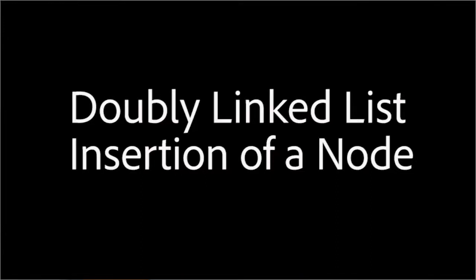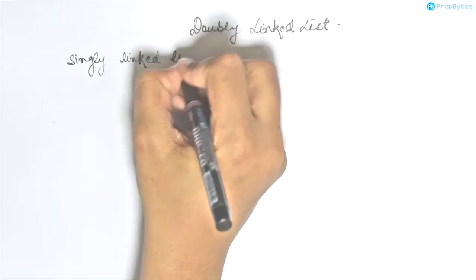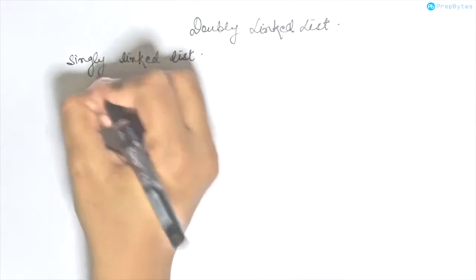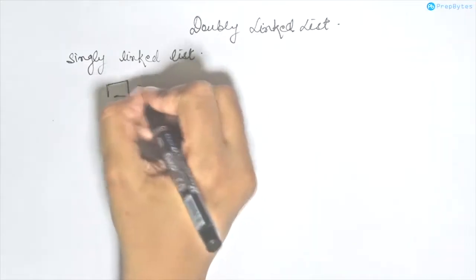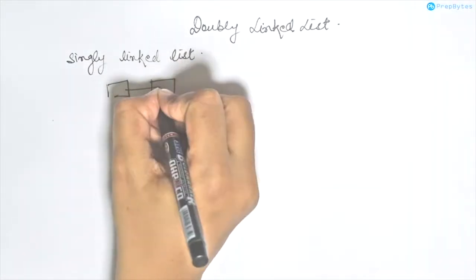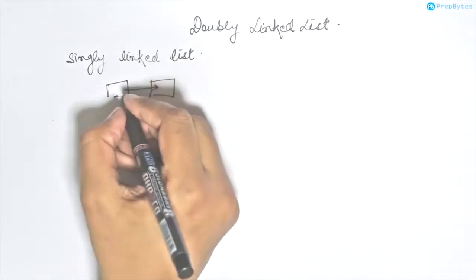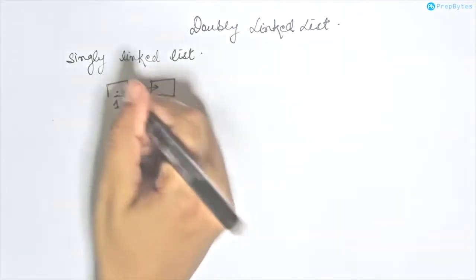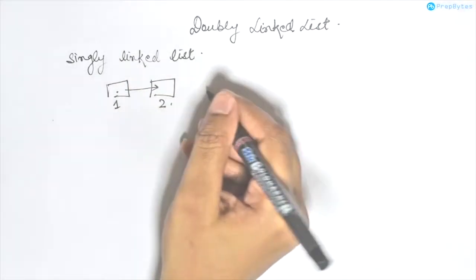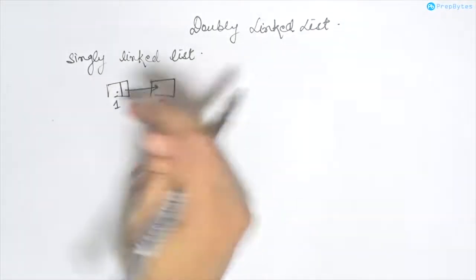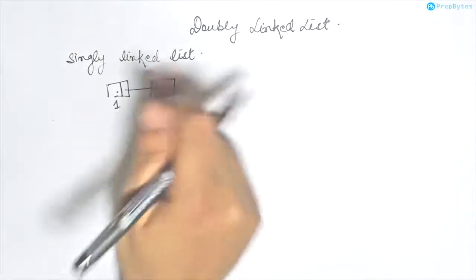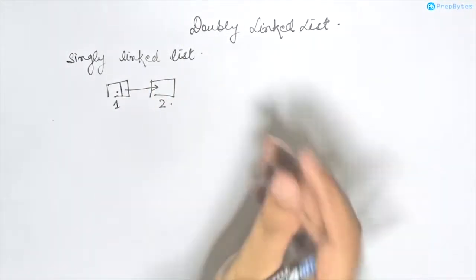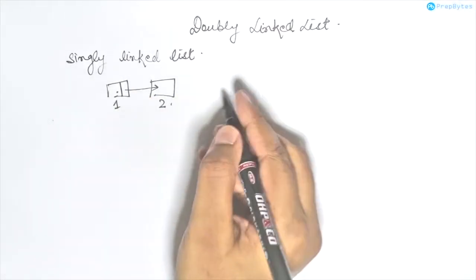So till now we have discussed singly linked list. What happens in singly linked list is that two nodes have a single link between them, which is the next pointer. So if this is the first node and this is the second node, the first node will have a pointer to the next node, which means it will have a next pointer storing the address of the second node. What happens in doubly linked list is that each node has two pointers.